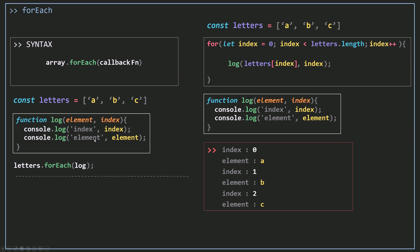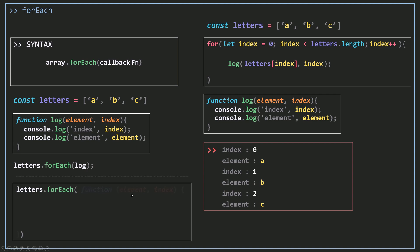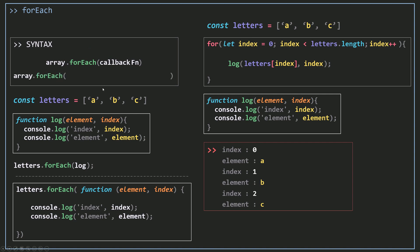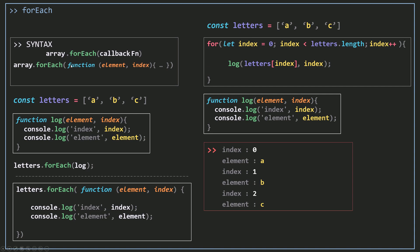You can also call the forEach method with an inline function — you don't have to create your function somewhere else and then pass it in. You can use the keyword function inside the parentheses with parameters inside. Always the element is the first parameter and the index is the second, then your function body. Using this code gives the same result.